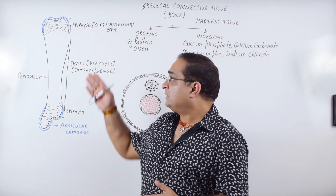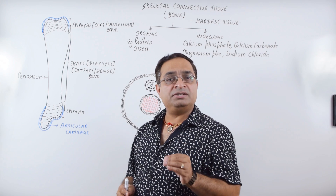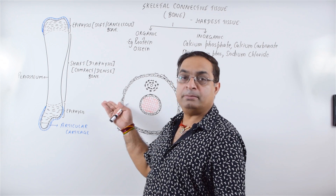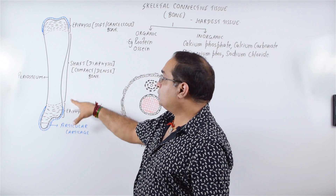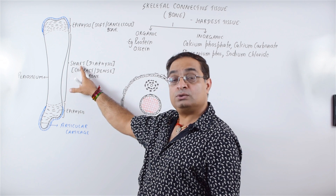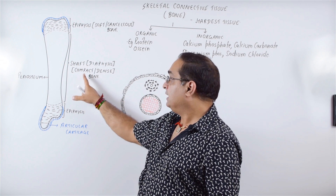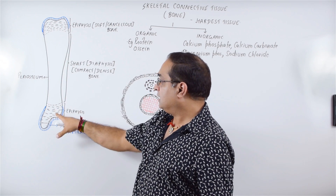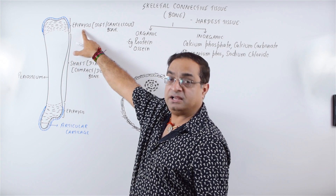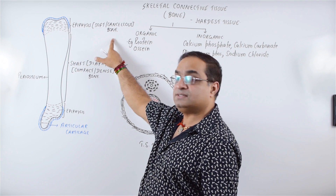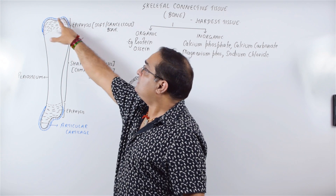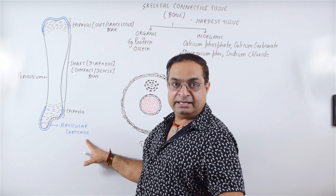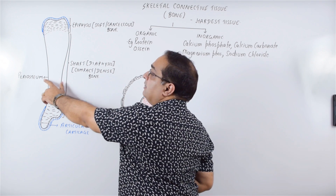As you can see in this diagram, this is the generalized structure of a long bone of mammals — a typical mammalian bone. This region is the shaft, also called diaphysis; it is the compact bone or the dense bone. The terminal regions are termed epiphysis; it is the soft bone or the cancellous bone. The ends are covered by articular cartilage, which is a type of hyaline cartilage.